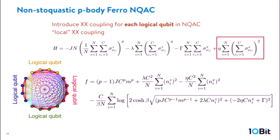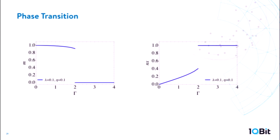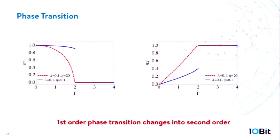Increasing the penalty coupling, the order parameter now changes continuously from one to zero. That means just putting the XX term within a logical qubit, you can still improve the computational result — you can remove the first-order phase transition. This model was quite simple — just a P-body ferromagnetic case — so you might wonder if this is just an artifact of the simplicity. We therefore looked at the Hopfield model, which has randomness. The coupling has a random number for each logical qubit.